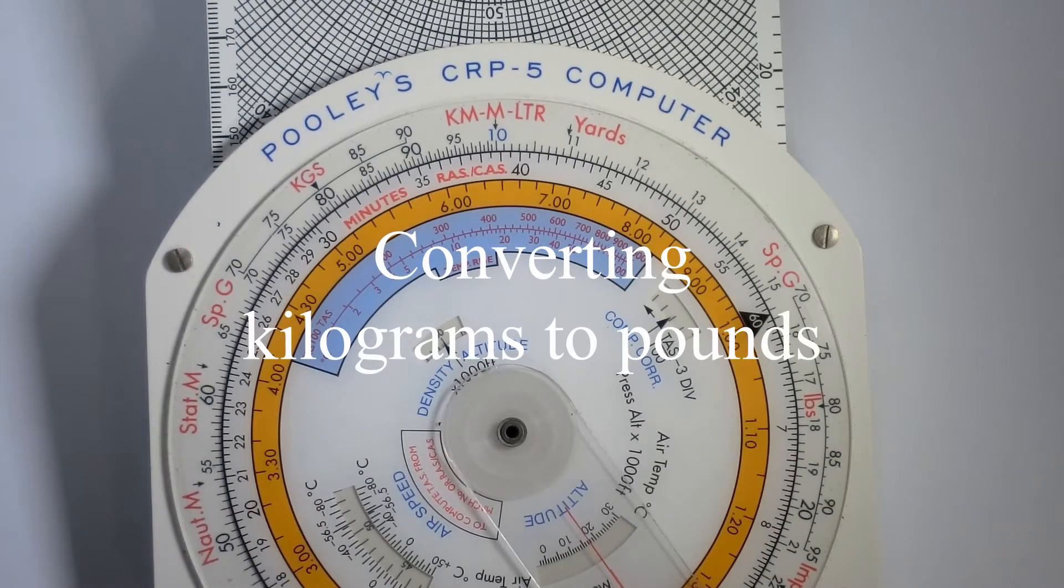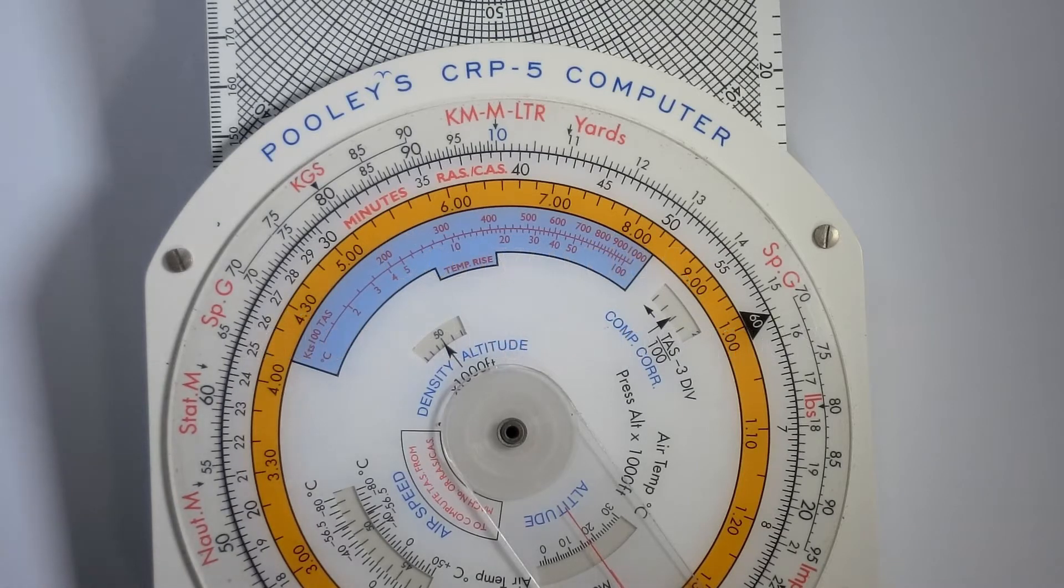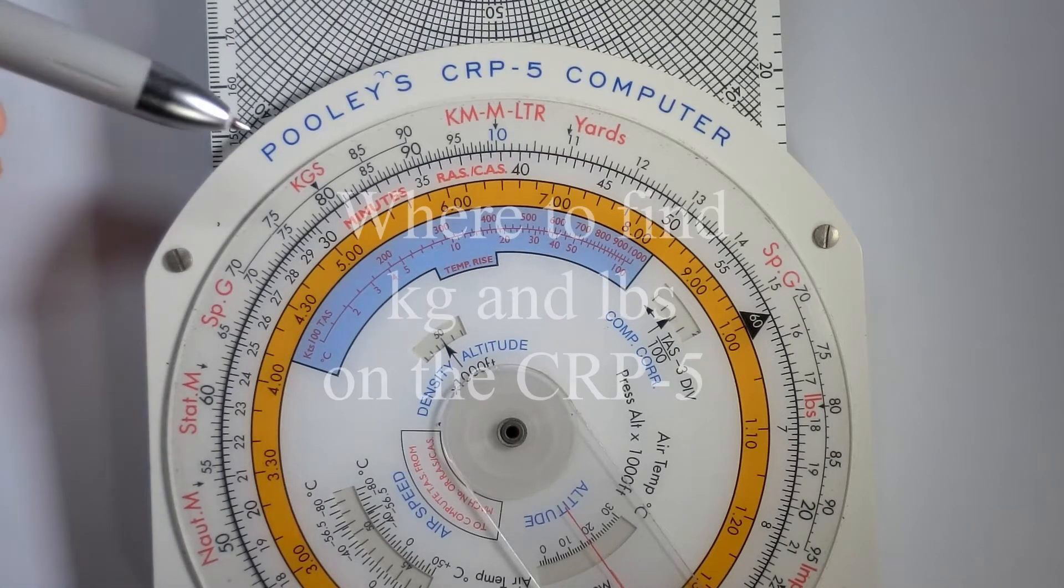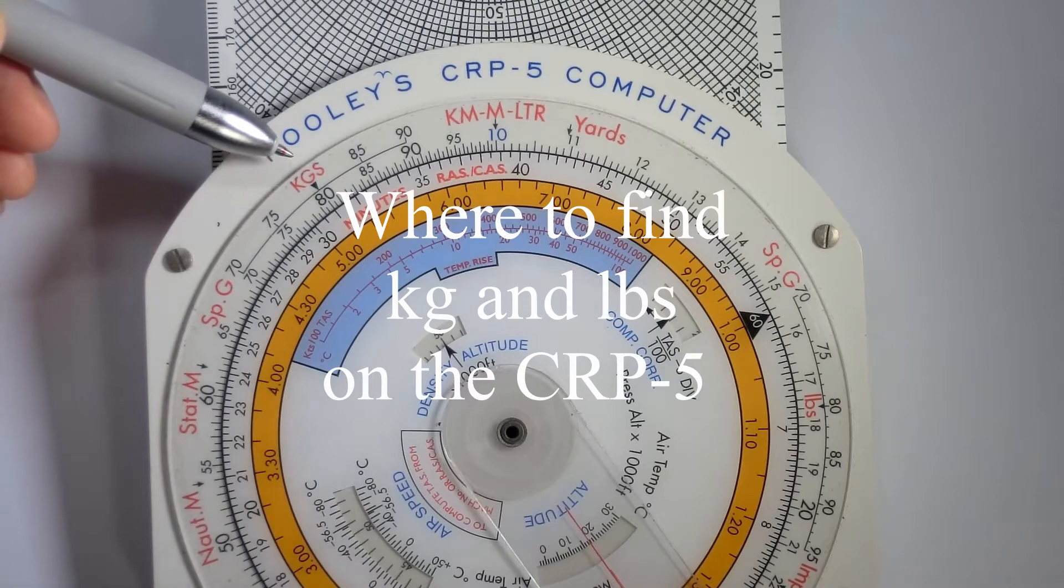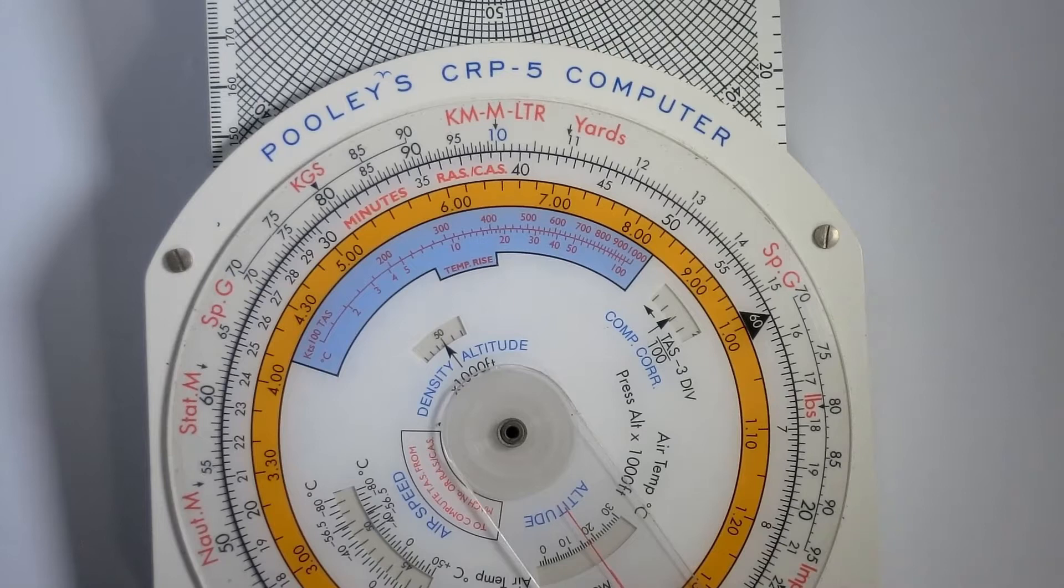Let's look at how to convert kilograms to pounds and pounds to kilograms using the Pooleys CRP-5 flight computer. You will find the units for kilograms as well as for pounds. This video will show you how to change from kilograms to pounds and vice versa.